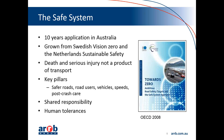Some of the key elements of the safe system: firstly, coming from the Vision Zero element, that death and serious injury aren't just a natural byproduct of transport — that's not acceptable. We should be moving to a situation where death and serious injury is not seen as a norm on our roads, and certainly be working towards the long-term goal to eliminate death and serious injury. That's certainly a long-term goal — it's not going to happen in the next one to two years, but it's where we're aiming towards.